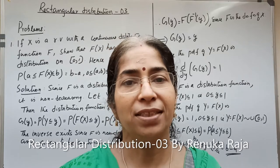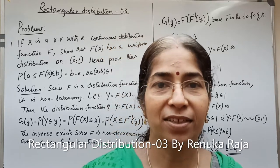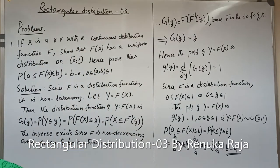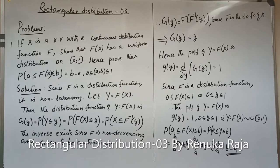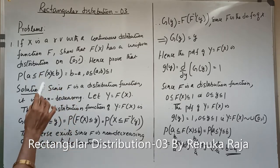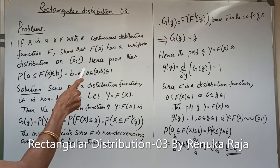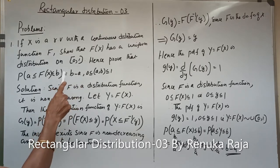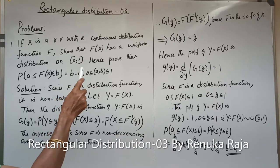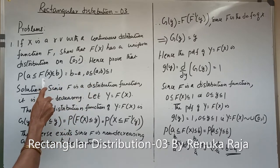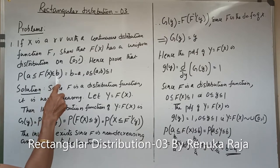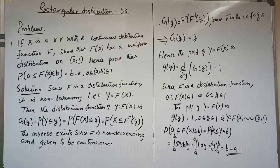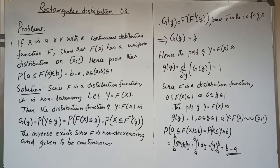We are continuing the problems on rectangular distribution. Now we discuss a problem. The question is: if X is a random variable with a continuous distribution function f, show that capital F of X has a uniform distribution on (0,1), hence prove that P(a ≤ F(X) ≤ b) = b - a, where 0 ≤ a, b ≤ 1. We shall obtain the solution.